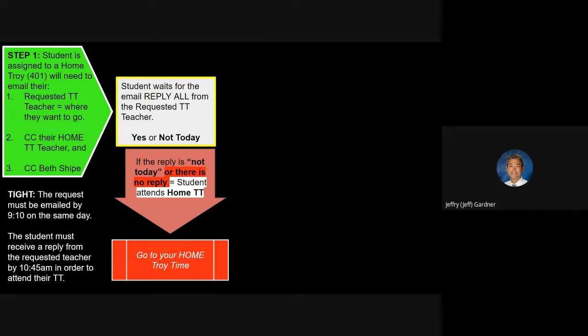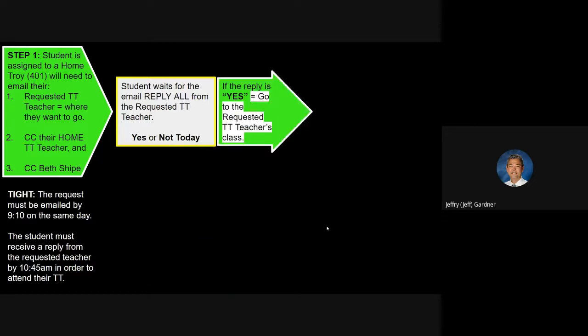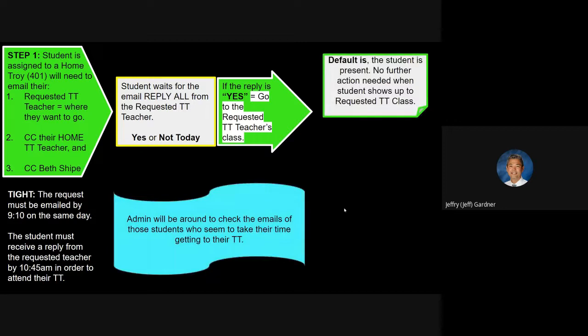Remember, this request for Troy time is only for students that don't already have an intervention. Let's go to the positive side of this. If the reply is yes, you then get to go to the requested Troy time teacher's class. There's no hall passes - this is your electronic hall pass. The default is the student is present. No further action needed when student shows up to the requested Troy time class. We're banking on the fact that our students are going to do the right thing. They're going to go where they're supposed to get to, they're going to check in with their teacher, and the teacher then can start working with you.